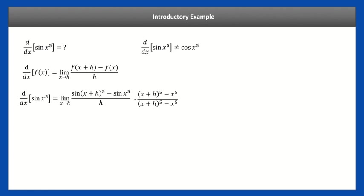What we're going to do first is multiply by this fraction — remember this fraction is just one, so it doesn't change the limit. We're going to multiply by this part: x plus h to the fifth minus x to the fifth, top and bottom. You'll see why we do that shortly. We're multiplying by that part without the sine.